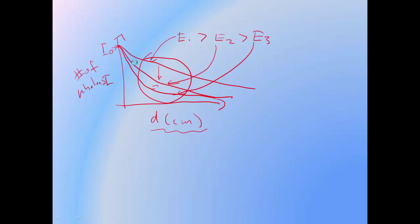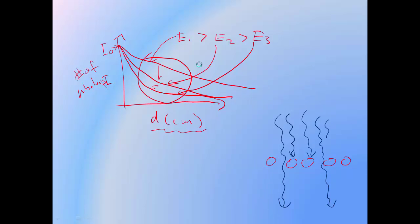The reason exponential attenuation doesn't hold true in the presence of scattered photons is that attenuation only tells you what proportion of your beam has actually hit something — it doesn't tell you anything about what happens next. For example, you have a collection of photons hitting particles: half the photons have hit something and half have made it through, so half the beam has been attenuated. Not all of the photons that interact with matter are absorbed.